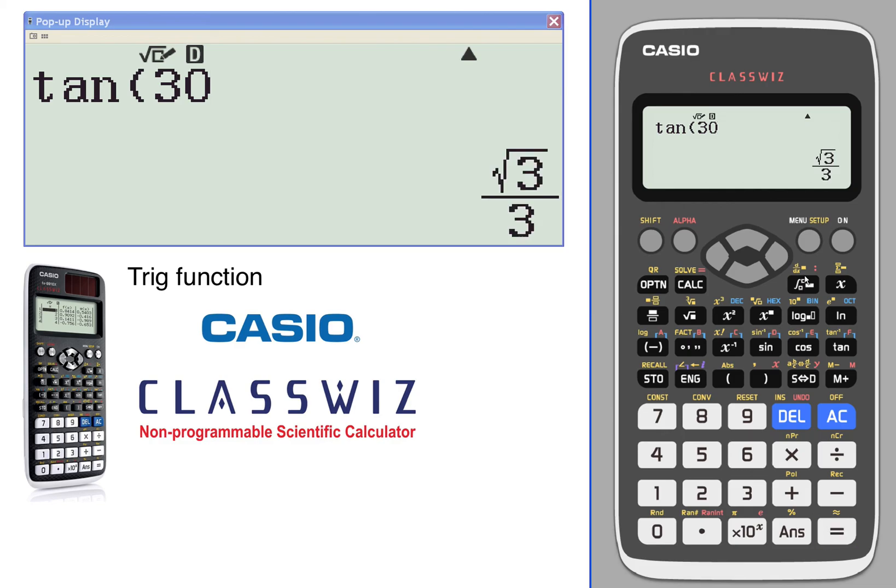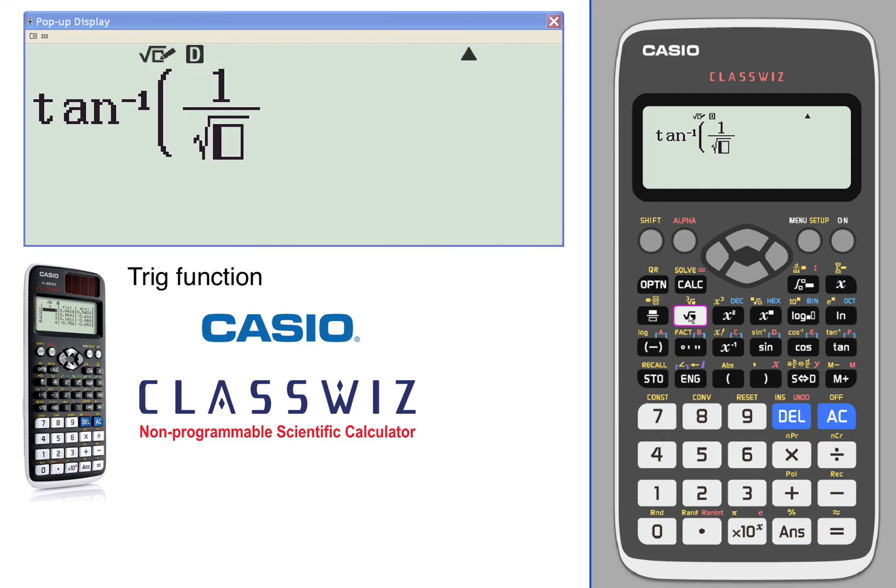And again, you can work backwards as well. So if you set arc tangent of the square root of 3 over 3, or 1 over the square root of 3. 1 over radical 3. Oh, I put the parentheses. Got to put that at the end there. Put that there.